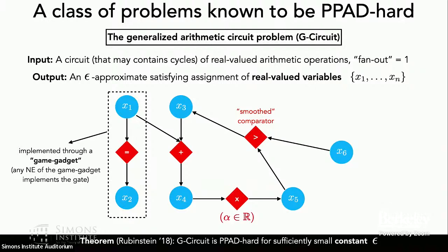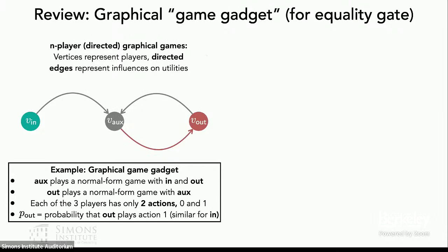Basically, we're going to reduce equilibrium computation in TBSGs to this generalized circuit problem, by identifying certain types of TBSGs such that a necessary condition for the equilibrium of that TBSG will implement this type of gadget — commonly called a game gadget. This is also the approach taken to show hardness and intractability for normal form games.